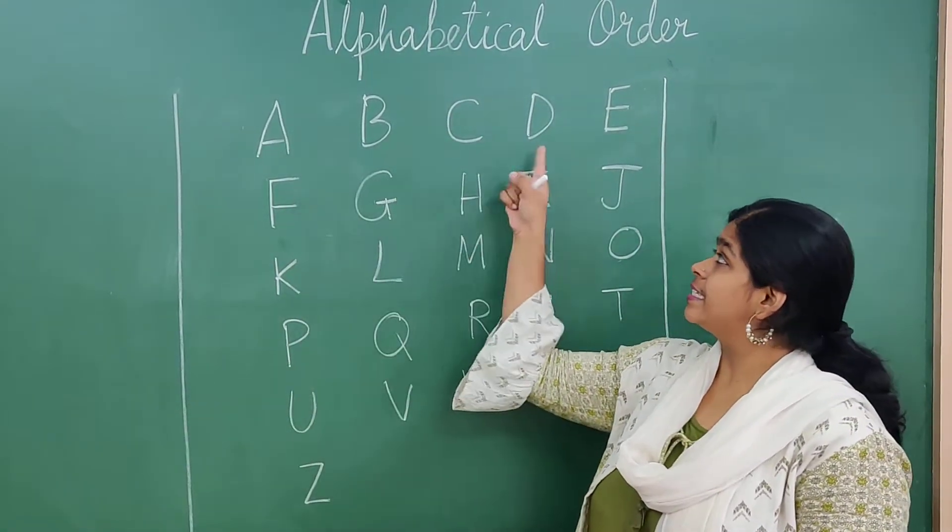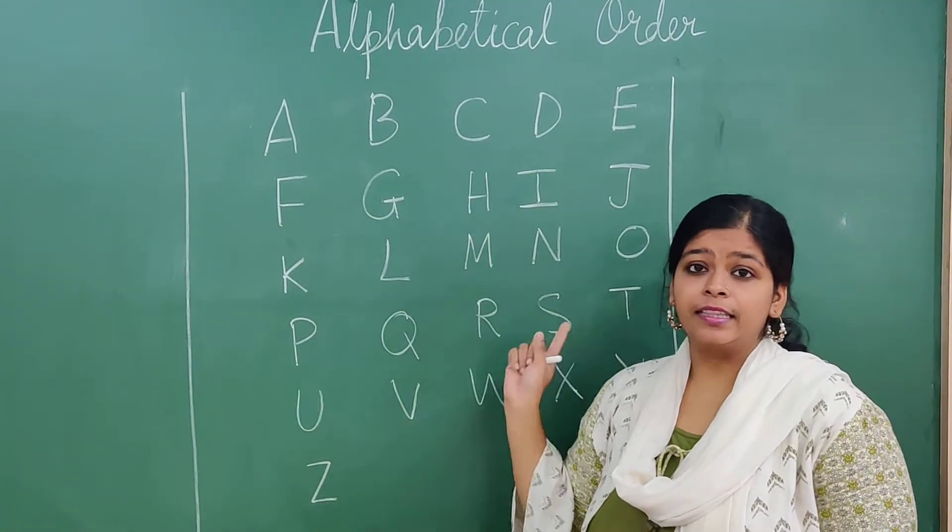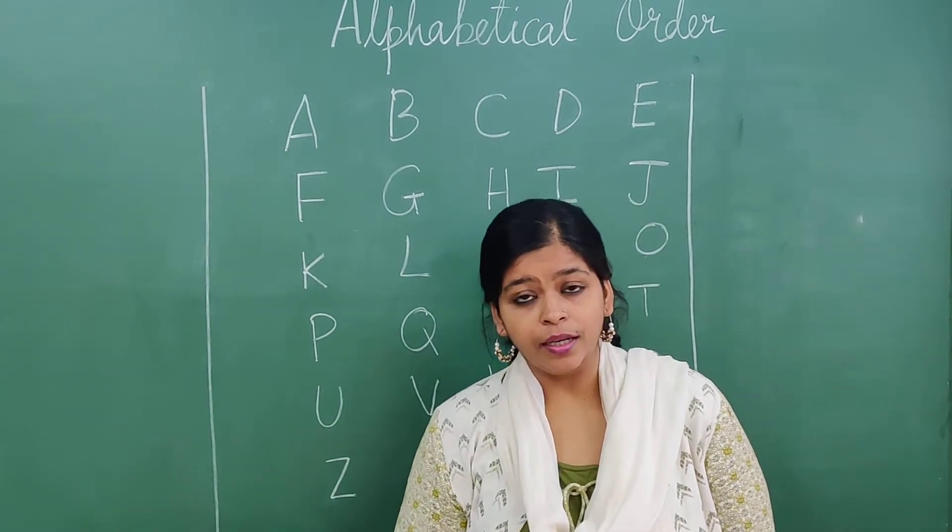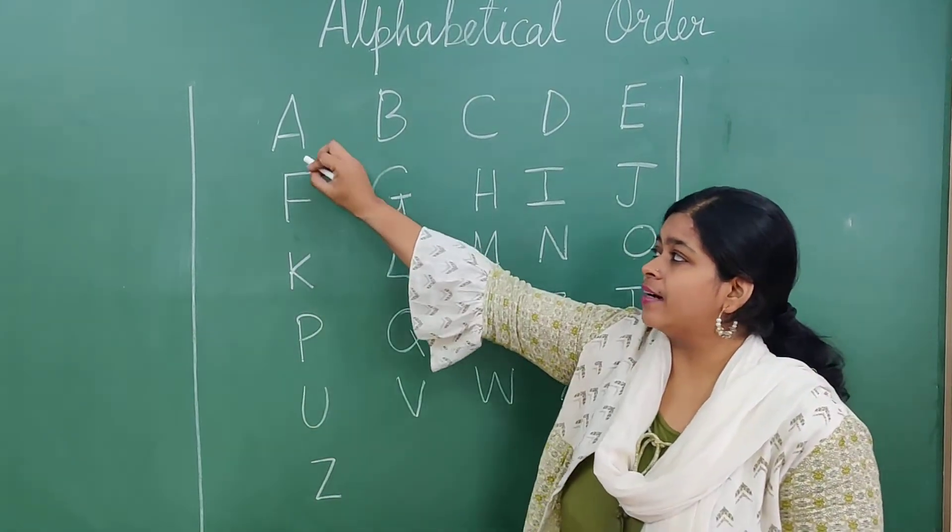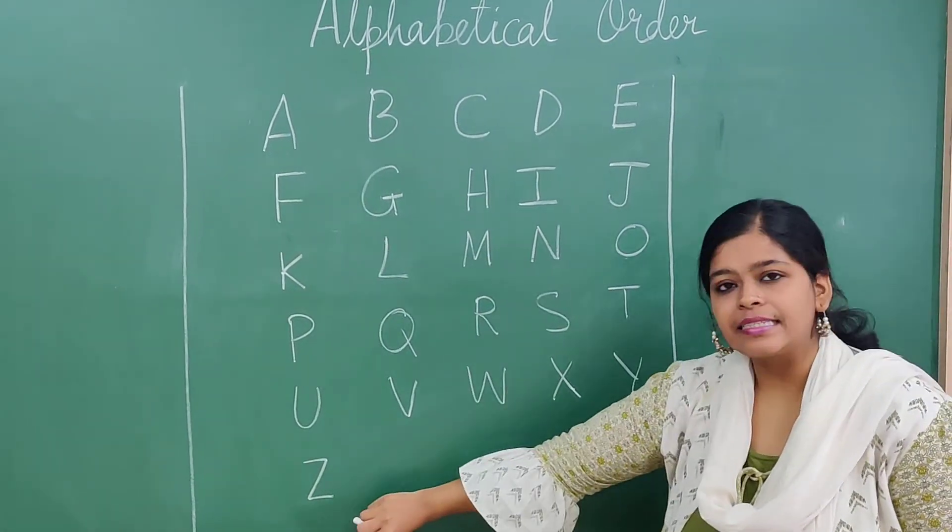So, there are 26 letters in the English alphabets. Okay, how many letters? 26. We always start with A and we end with Z.